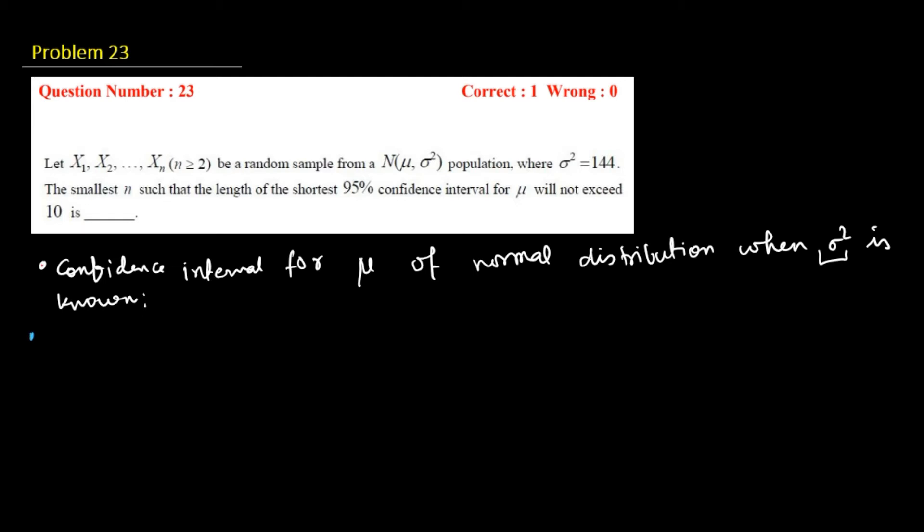Step 1, you identify what is gamma. Confidence level, which is here 95%, that is 0.95.